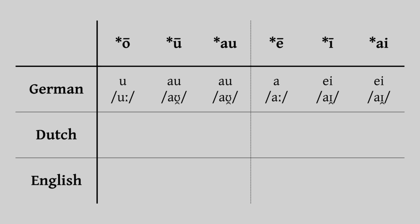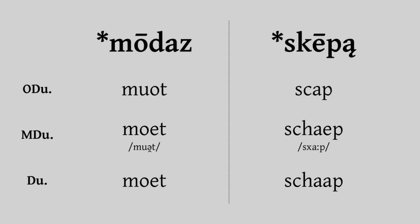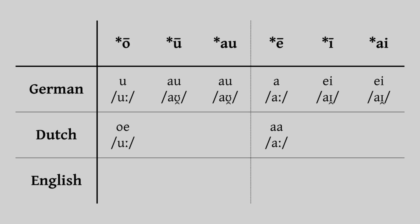Next, let's look at Dutch. The Dutch changes to the mid-vowels will look very familiar, as they undergo exactly the same sound changes as in German — the same diphthongization, weakening and monophthongization, and the same lowering. The only real difference is in the orthography, with Dutch writing its OO sound as a digraph O-E, and writing its other long vowels by doubling the letter of the short vowel. The high vowels are where we begin to see divergence.